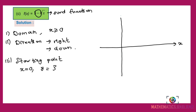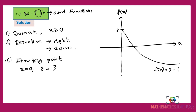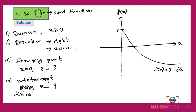We sketch the graph starting at (0, 3), going to the right and down. From the sketch we can see there is an x-intercept. To find it, set y equals 0: solving 3 minus √x equals 0 gives x equals 9. Label the graph f(x) equals 3 minus √x with x-intercept at 9 and y-intercept at 3.